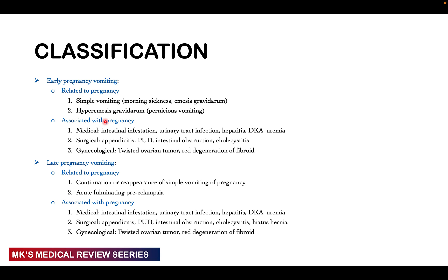Vomiting may be associated with pregnancy or with medical conditions such as intestinal infestations, urinary tract infections, hepatitis, DKA, or uremia. It could be surgical problems like appendicitis, peptic ulcer disease, intestinal obstruction, or cholecystitis. It could also be gynecological problems like a twisted ovarian tumor or red degeneration of a fibroid. In late pregnancy, it could be a continuation of simple vomiting, acute fulminant pre-eclampsia, or similar medical, surgical, and gynecological complications.